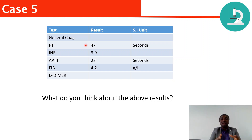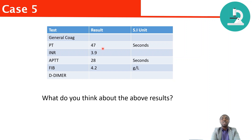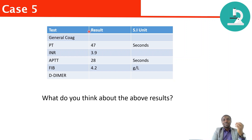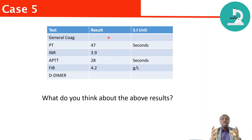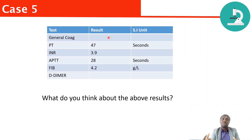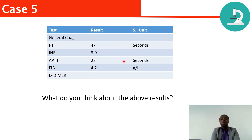If you do a mixing study — on this case it's called PT50 — that's 50% of the patient sample and 50% of the control, mixed together, then repeat the PT/INR. If it comes back to normal, it means factor deficiency, because the factors in the control sample have compensated for the factor deficiency in the patient sample. But if the PT50 is still prolonged, that could be an inhibitor — something in the patient sample inhibiting clotting factors in both the patient and control. So if you suspect factor deficiency, you do an extrinsic factor assay. If it's an inhibitor, you might look at things like lupus anticoagulant testing.